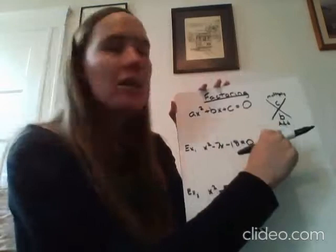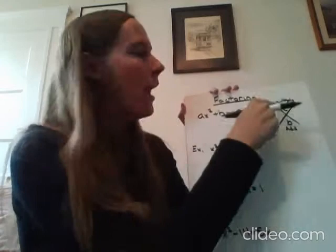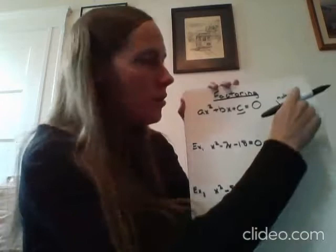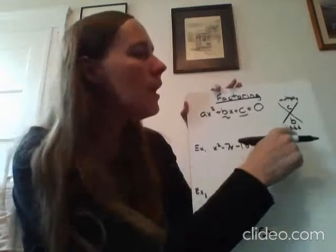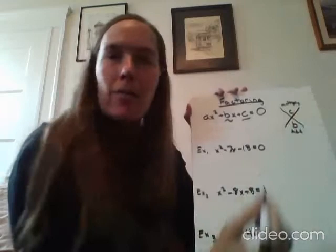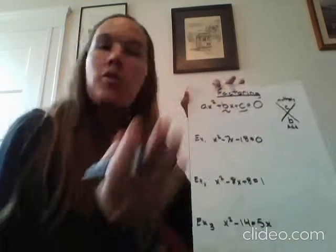You might have learned factoring the other way if you were in another class besides mine, but I like to do something called the x factor. I draw an x, whatever my c is, the number that doesn't have a variable attached to it goes on the top, and whatever my b is, the number that is attached to the x goes on my bottom. I like to think b bottom. And what I like to do is I look for two numbers that multiply to give you the c value, and add or subtract to give you the b value.